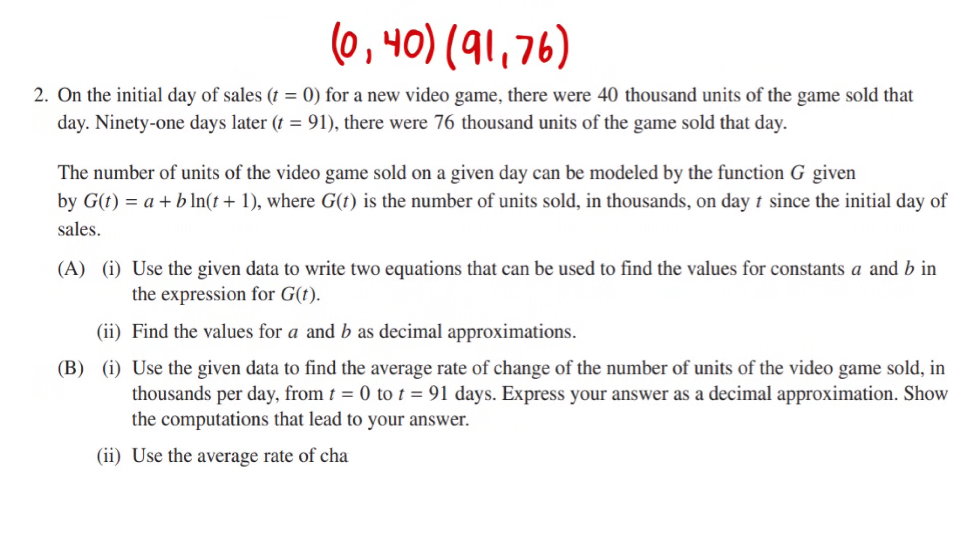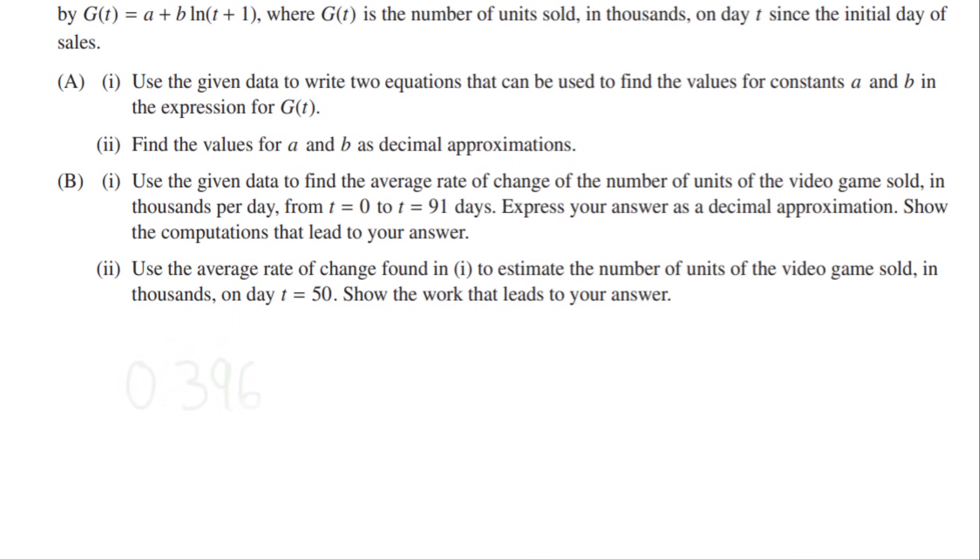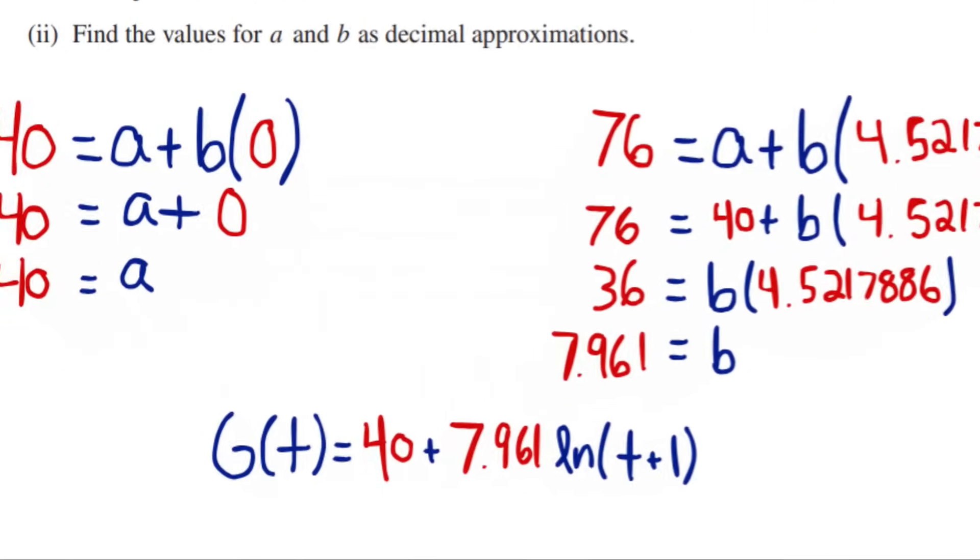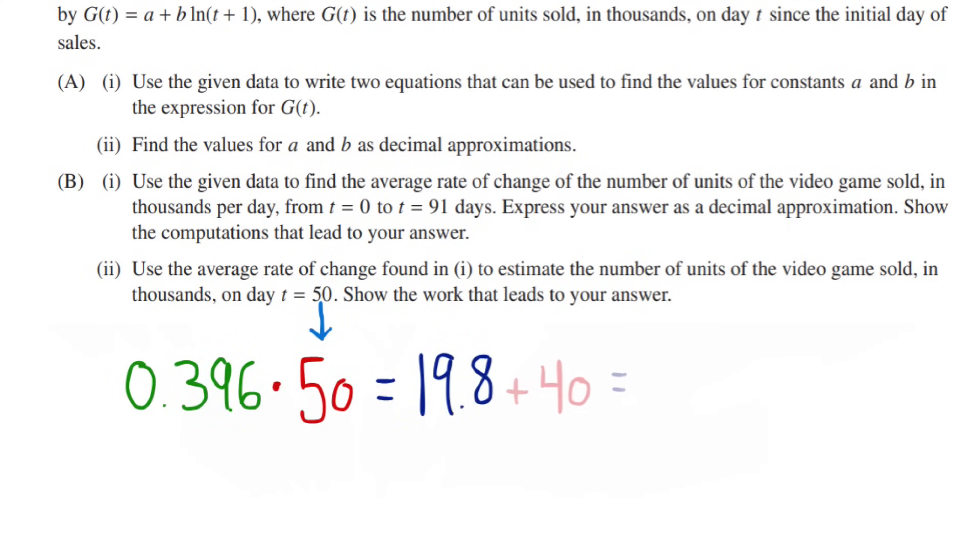Alright, next. Use the average rate of change found in i to estimate the number of units of the video game sold in thousands on day t equals 50. Show the work that leads to your answer. So this one is nice. All we have to do is multiply that rate of change we got earlier by 50 and solve. But since we have a y-intercept at 40 in the original log function, we also need to add that, meaning our final answer is 59.8 thousands of games.